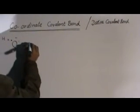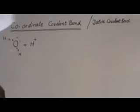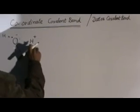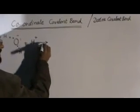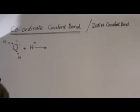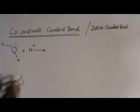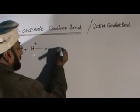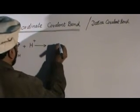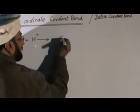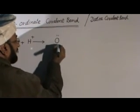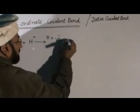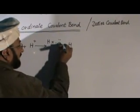Now we have an H-positive ion. H-positive ion is that atom which has a deficiency of electrons. When they react with each other, the oxygen atom will offer its lone pair to the H-positive ion. And in this way, a coordinate bond is formed between the water molecule and the H-positive ion. This lone pair is shared with the hydrogen atom.